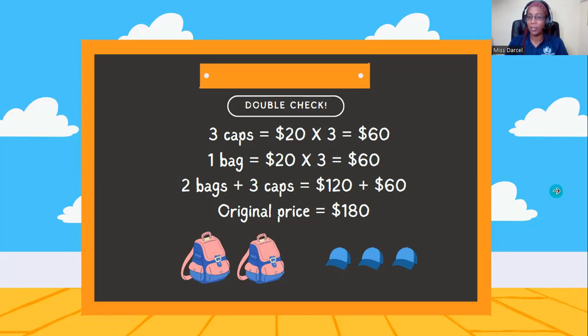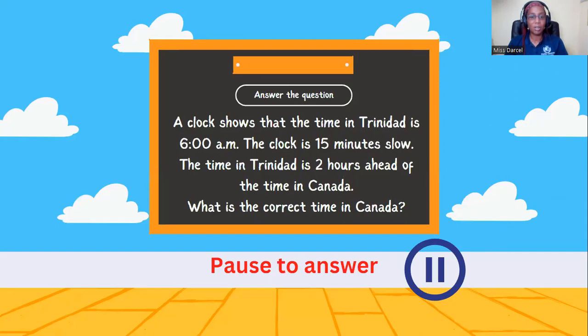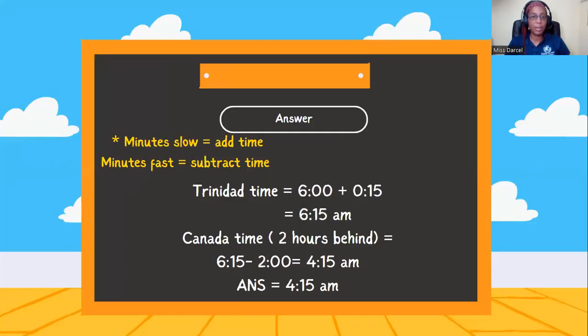All right. A clock shows that the time in Trinidad is 6 a.m. The clock is 15 minutes slow. The time in Trinidad is two hours ahead of the time in Canada. What is the correct time in Canada?